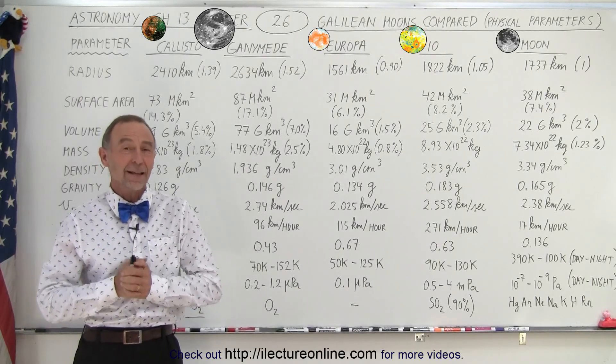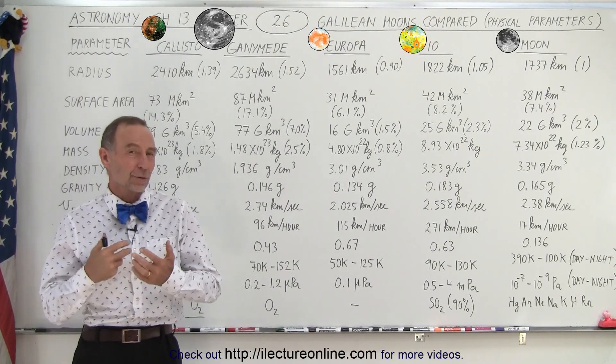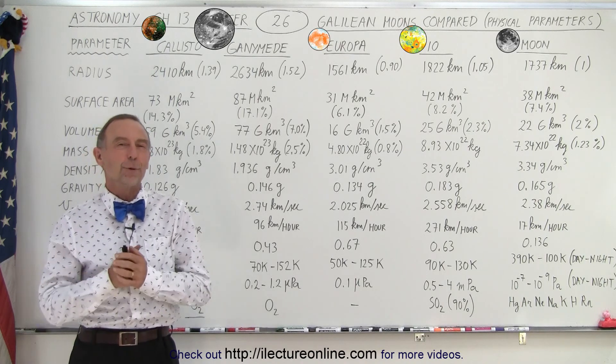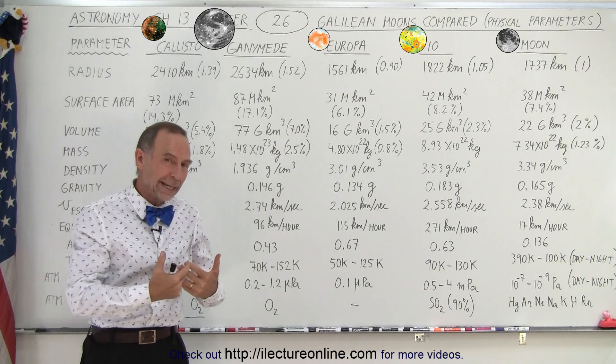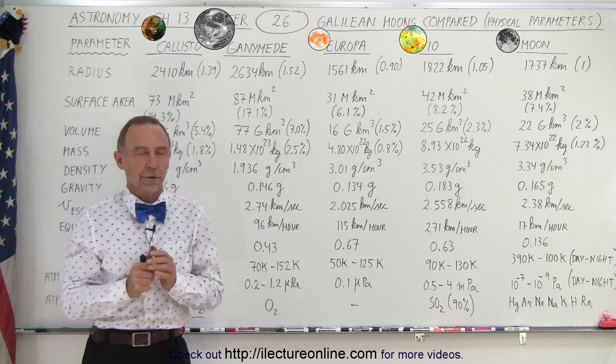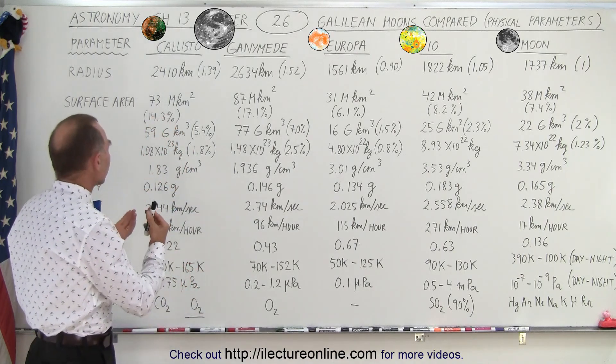Welcome to Electronline. Now let's take a look at the physical characteristics or properties of the four Galilean moons and let's compare it to the moon, our own moon, and in some cases also to the Earth. So first of all, the radius.